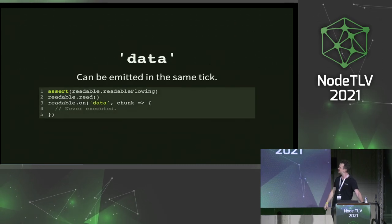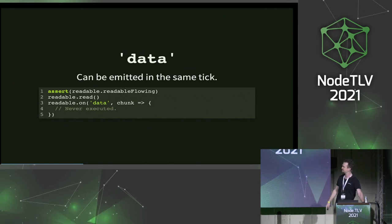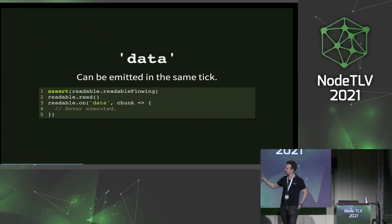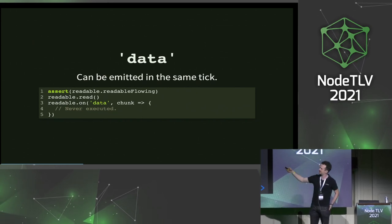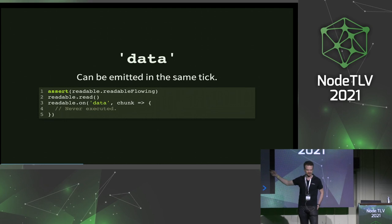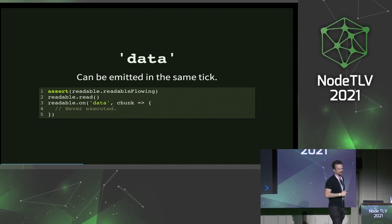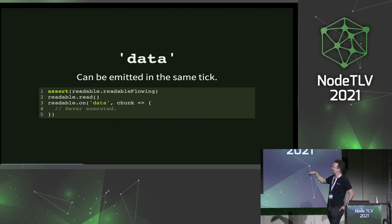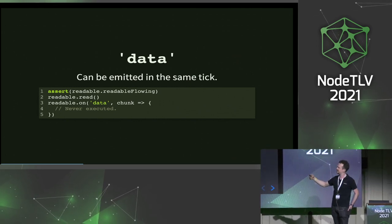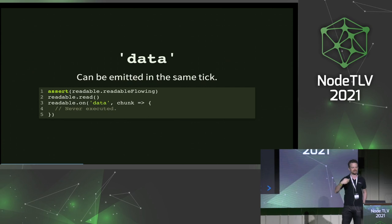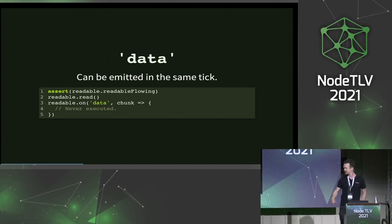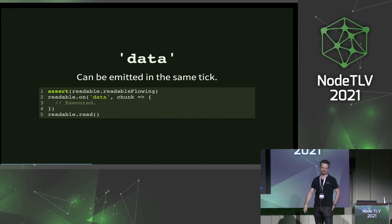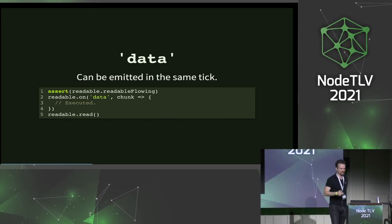Another problem with data is it can be emitted in the same tick. If the stream is already flowing, you call read and then register an event listener — the event listener won't be called for that read. This breaks the rule where events should be emitted in the next tick so you can register the event handlers. Unfortunately, the only way around this is to make sure to call read after you register data. Otherwise, you might miss stuff.